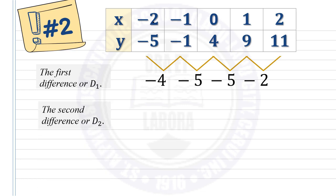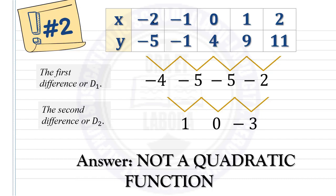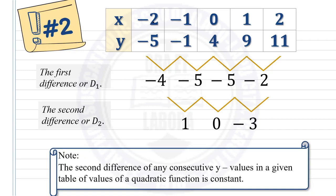Let's proceed to the second difference. Negative 4 minus negative 5 is 1; negative 5 minus negative 5 is 0; negative 5 minus negative 2 is negative 3. As you can see, the second differences are not the same or not constant. So the given table of values does not represent a quadratic function, because the second difference is not constant. The second difference of any consecutive y values in a quadratic function is always constant.